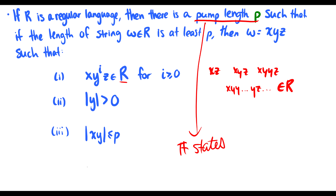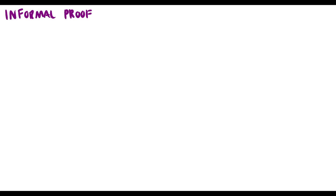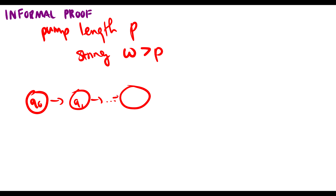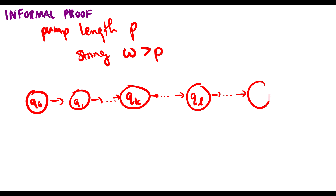Let's show informally that if a language is regular we should be able to pump some part of it. We have some pump length p, and we take a string w which is greater than p. This means we're going to have to loop through some of these states. So let's have our starting state pointing to q1, continuing on to some state qk, then continuing to ql, and eventually finishing at some final state F.